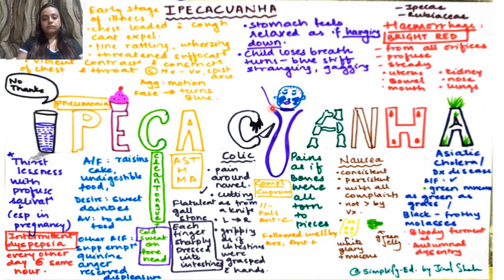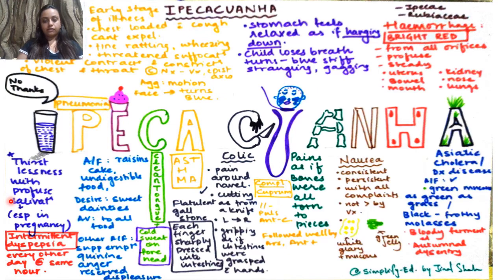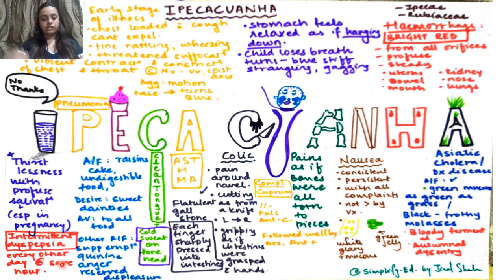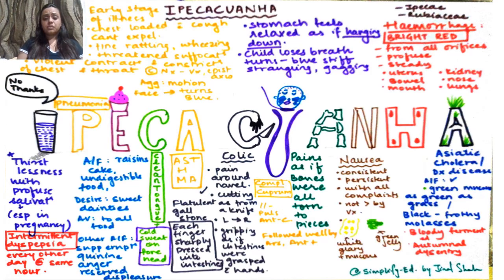The U represents the face turning blue, and the stomach feeling relaxed as if hanging down. The child loses breath, turns blue, becomes stiff, with strangling and gagging. There is also intermittent dyspepsia every other day at the same hour. Additional symptoms include cold sweat on the forehead, and a sensation as if each finger were sharply pressed into the intestines, and flatulence of gallstones.